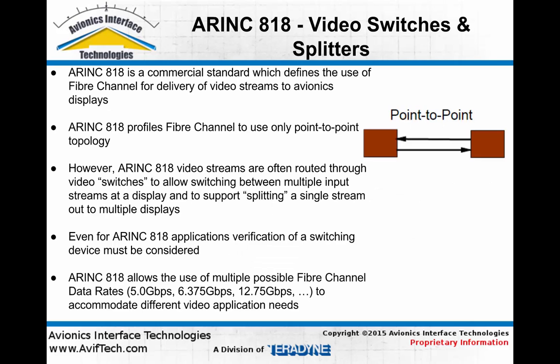Another commonly used adaptation of fiber channel for avionics is ARINC 818, a commercial aerospace specification which defines the use of fiber channel to carry video data streams within avionics systems. ARINC 818 allows only the point-to-point topology of fiber channel. However, in most real avionics systems, video streams are often routed through video switches to allow switching between multiple input streams at a display and to support splitting a single stream out to multiple displays, so there is typically a fiber channel switching element at the core of the system which must be tested and verified.